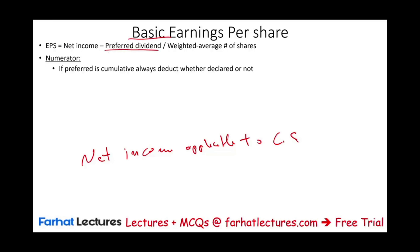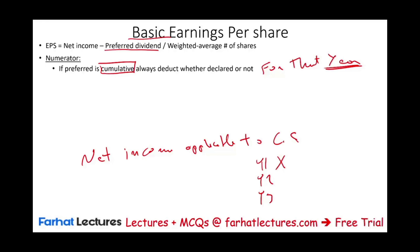When do we always deduct preferred dividend? If the preferred dividend is cumulative, we always deduct it — whether it's declared or not for that year — because we only deduct that particular year's amount. What does cumulative mean? In year one, assume you have preferred stock and you did not make any profit — you did not pay any dividend, so preferred shareholders got nothing. In year two, the same — no profit or no dividend declared. In year three, the company made a lot of money and is ready to pay dividends. If the preferred dividend is cumulative, they have to pay year one, year two, then year three. So regardless of whether they pay or not, if the preferred is cumulative, you assume you are responsible for it — and you deduct only one year of dividend for that particular year.